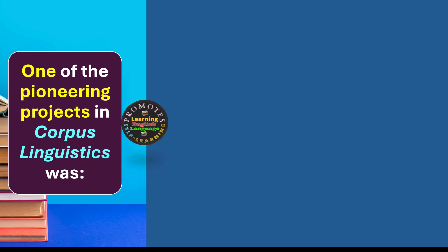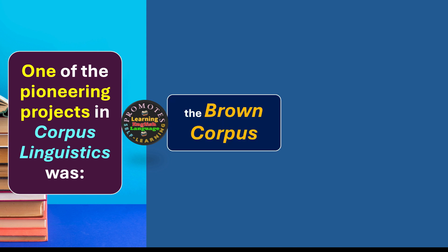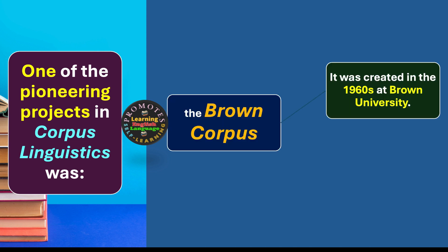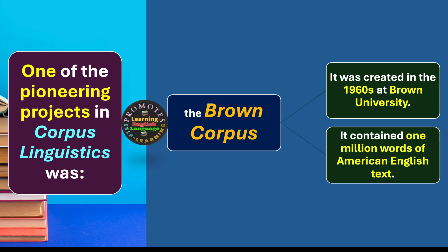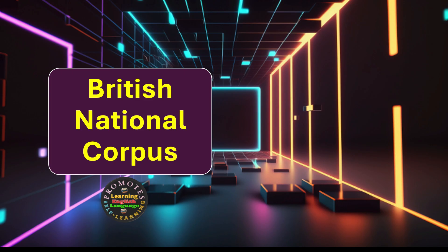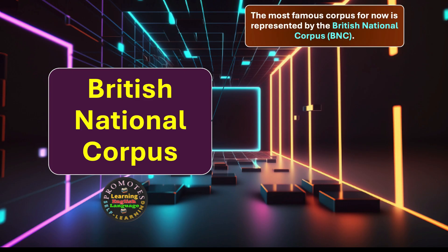One of the pioneering projects in corpus linguistics was the Brown Corpus. It was created in the 1960s at Brown University and contained one million words of American English text.